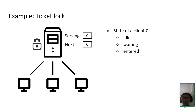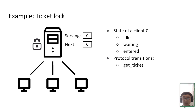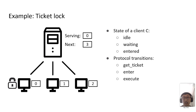The server maintains two integer variables: the current serving ticket and the next ticket to be assigned. A client can get a ticket — it gets the next ticket and increments the next ticket counter, and another client can do the same. The client holding the serving ticket can enter the critical section, execute while holding the lock, and after finishing, leave the critical section, return the lock, and increment the serving ticket to serve the next client.